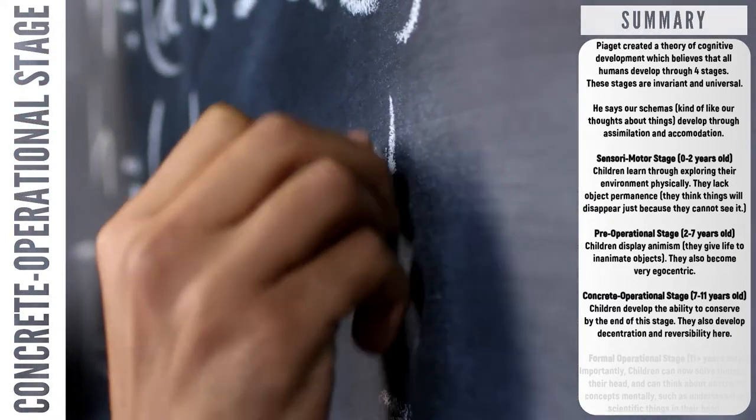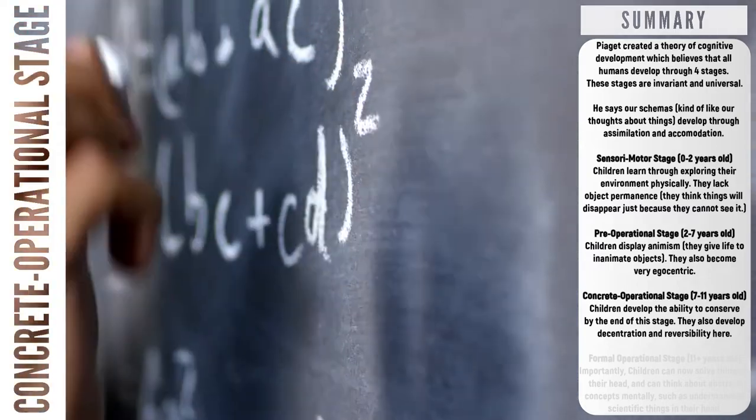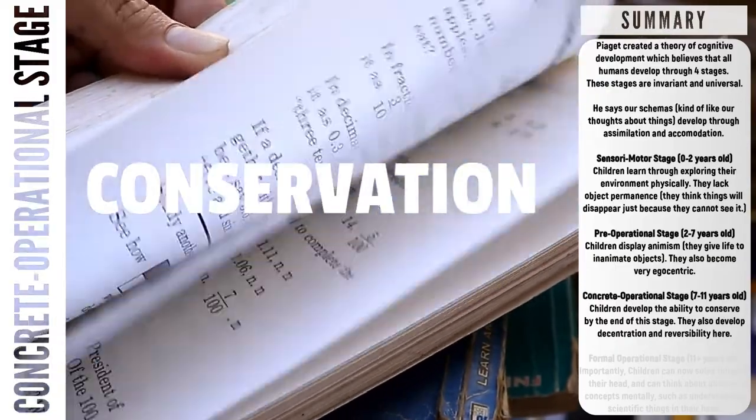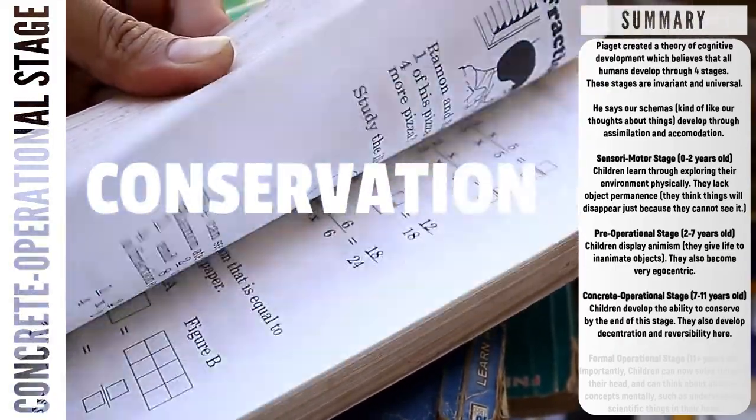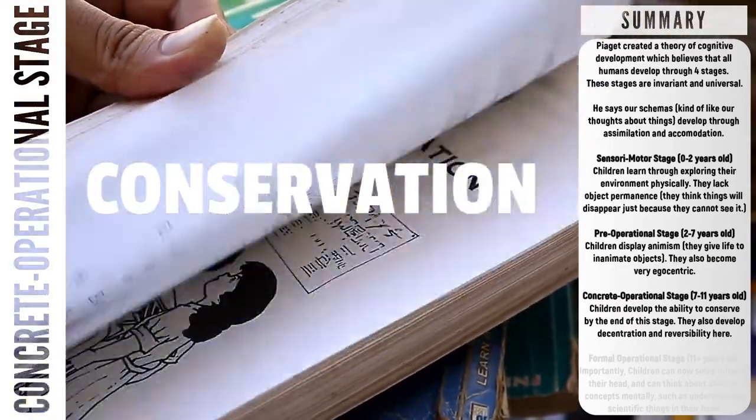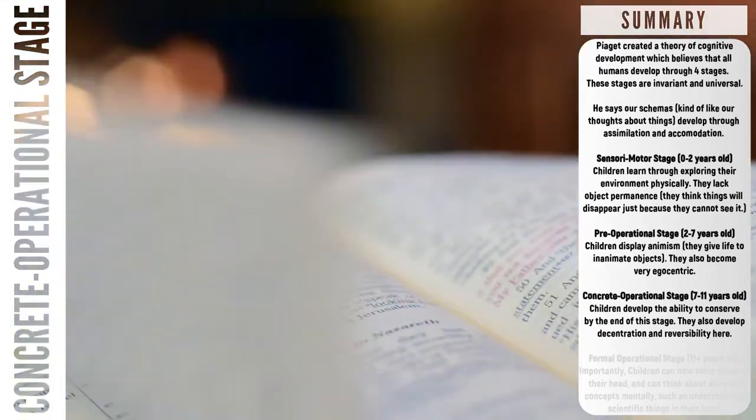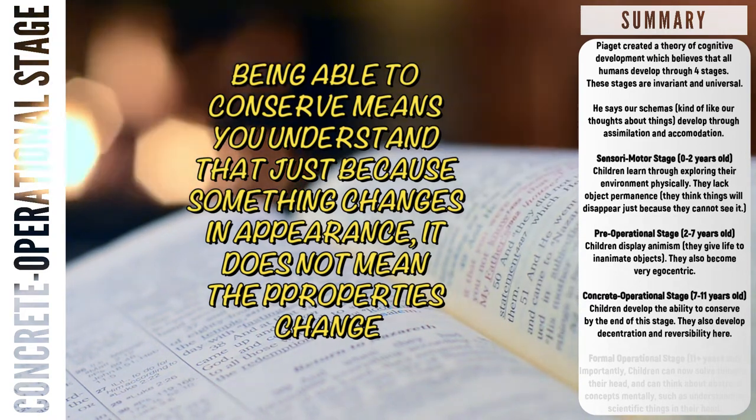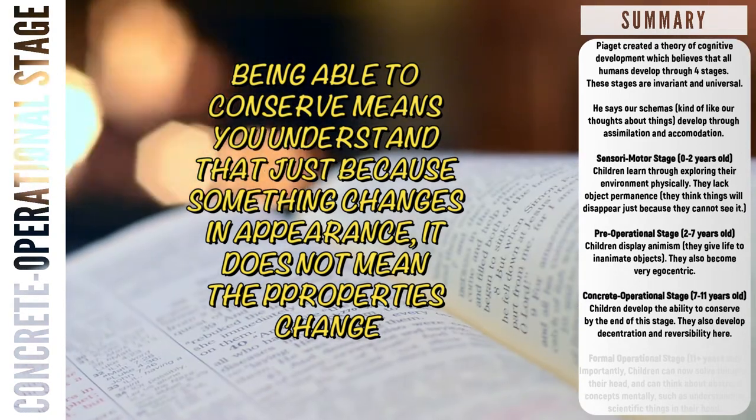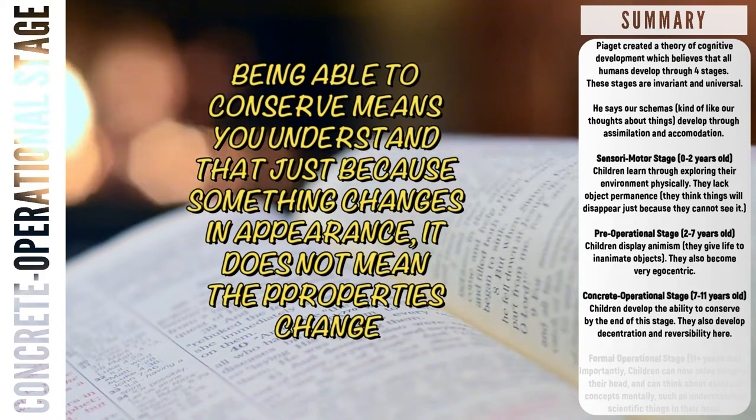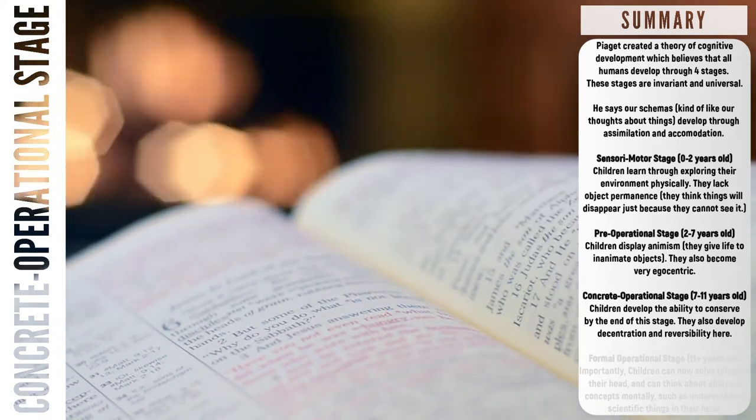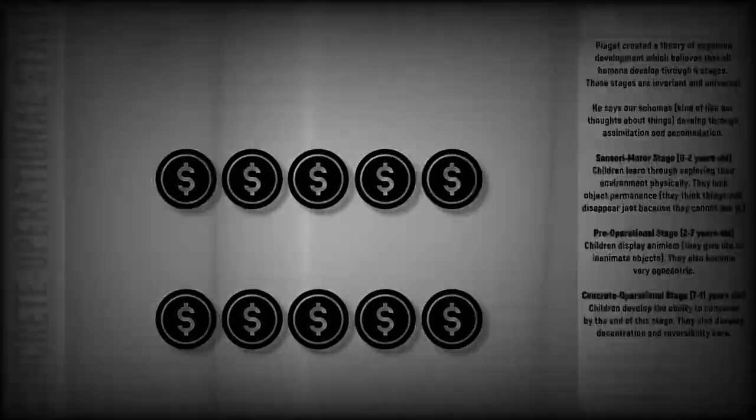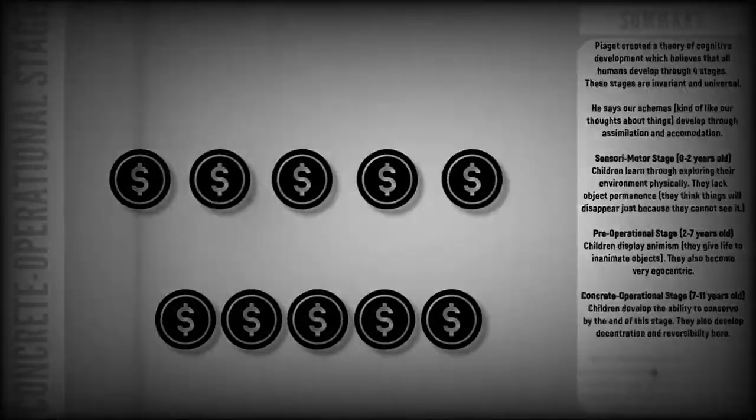Finally, we have maybe the most important key term: conservation. This links heavily to the key study in this topic, which is Piaget's study himself. The word conservation simply means that children understand that the properties of certain objects, such as size or length or weight, don't change even if the object's appearance changes. Let me give you the real example that Piaget did himself: if I show you these two rows of coins, you should be able to tell me they both have the same amount.